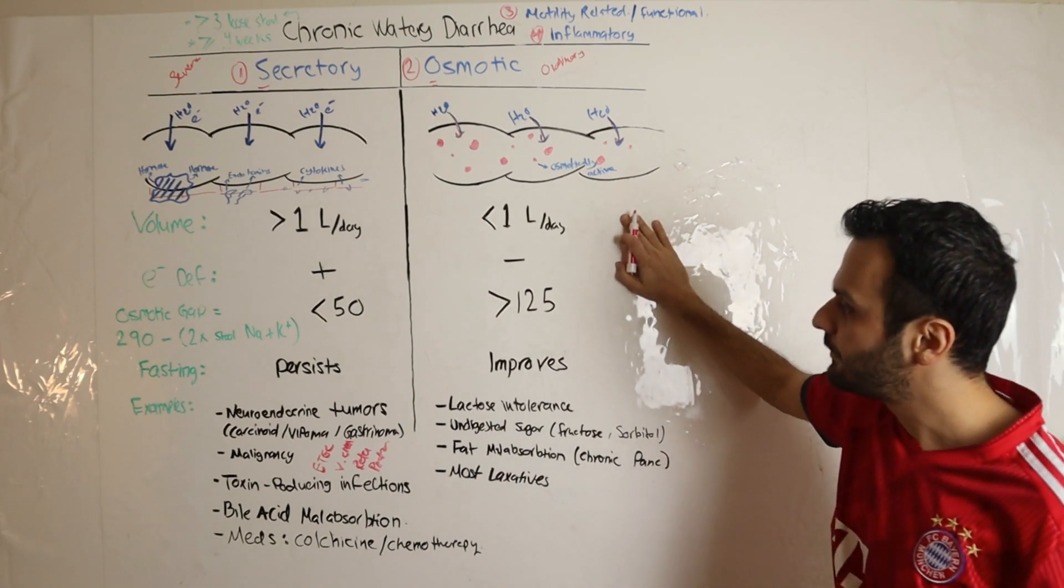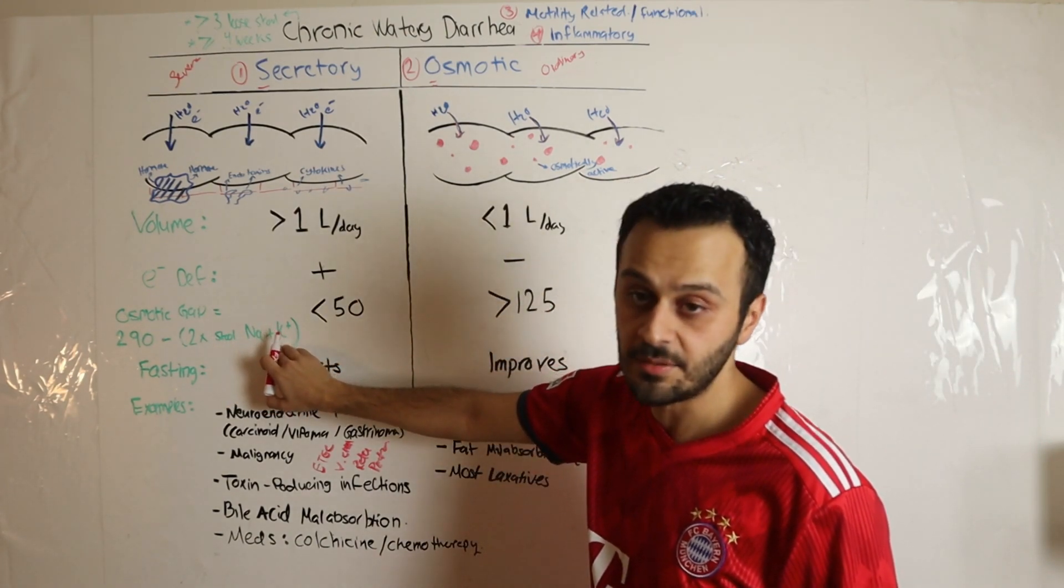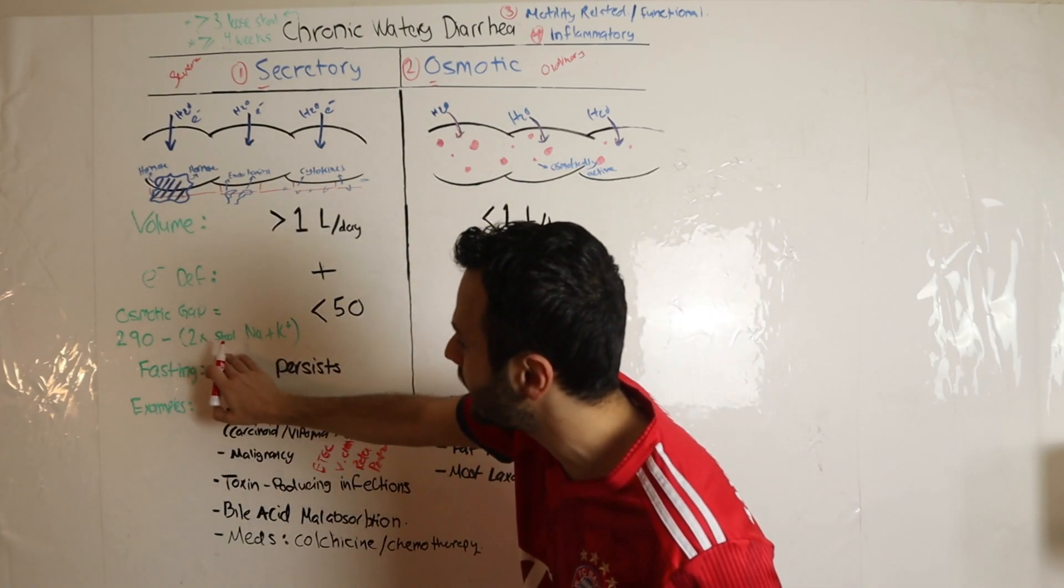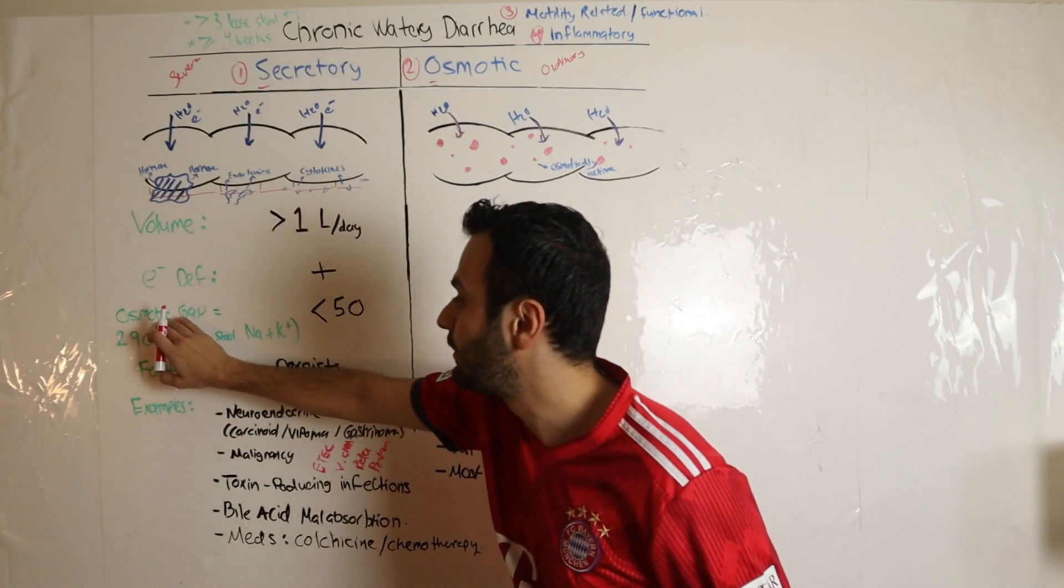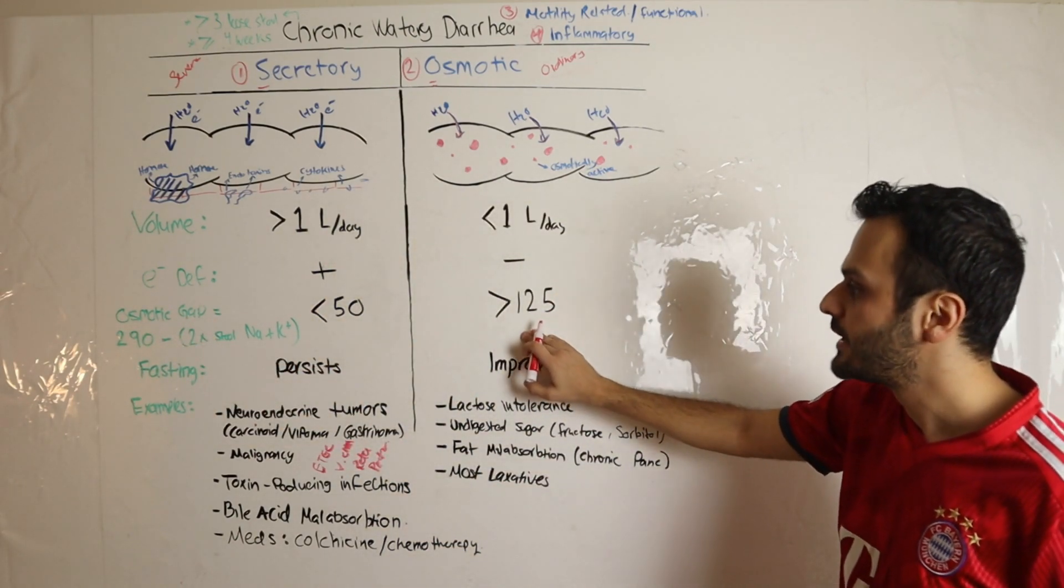However, in osmotic diarrhea, you won't have as much excretion of sodium and potassium in your stool, so this number will be less negative and your osmotic gap will be elevated at more than 125. Remember this equation – they commonly ask it in your board examination.